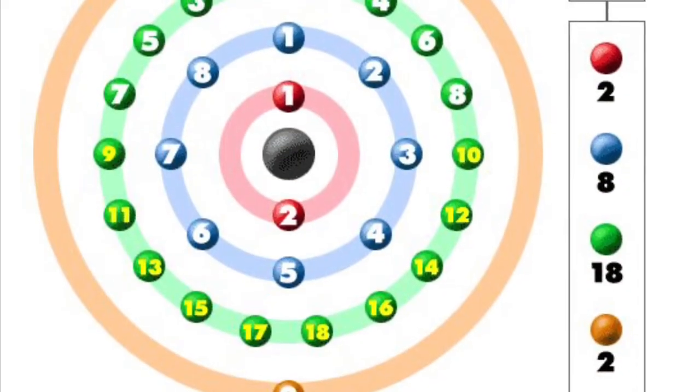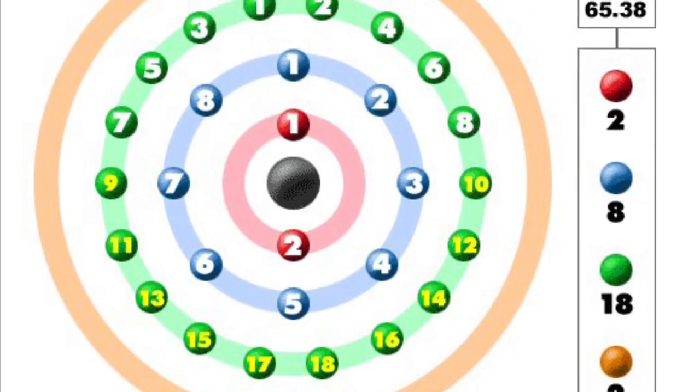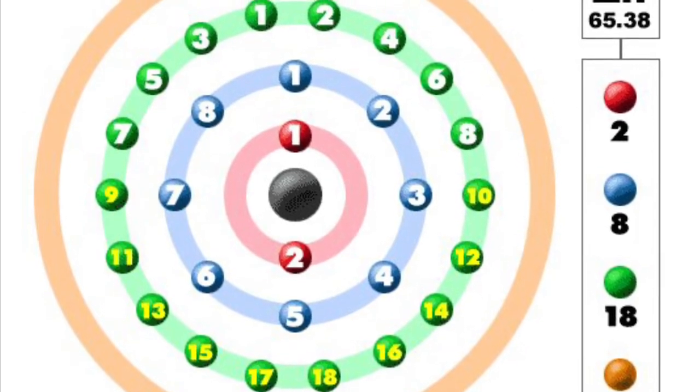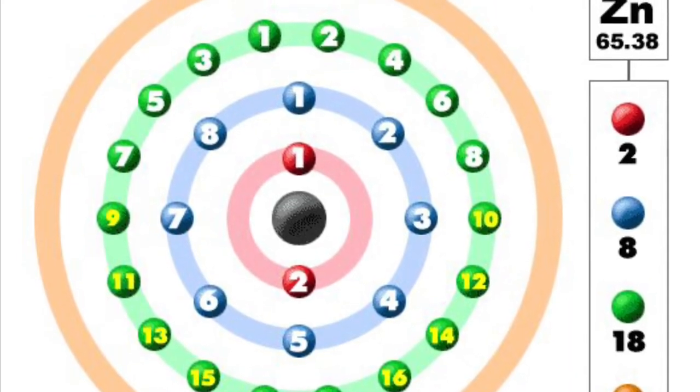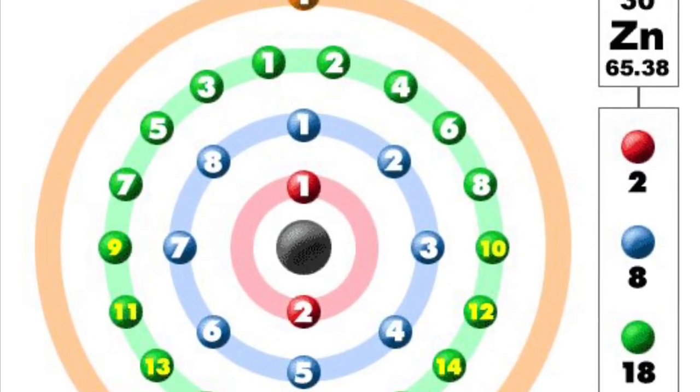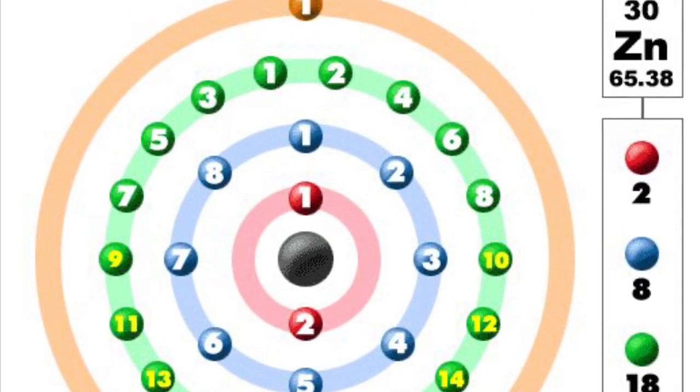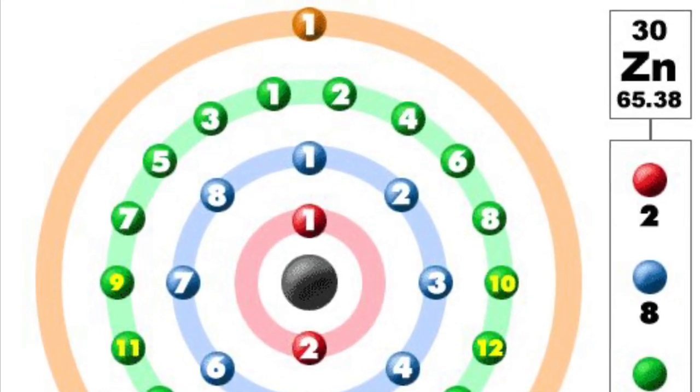Remember to follow the 2-8-8 rule whenever drawing simple elements 1 to 20. If drawing a larger element over 20, the rule changes to 2-8-18-32 as you can see in this example of zinc that has an atomic number of 30.